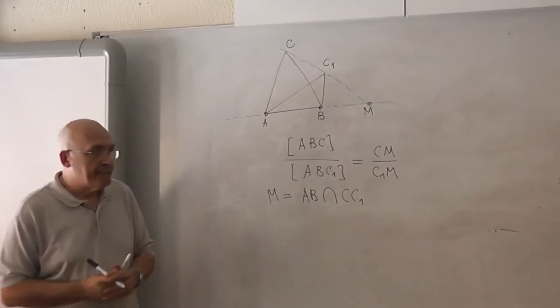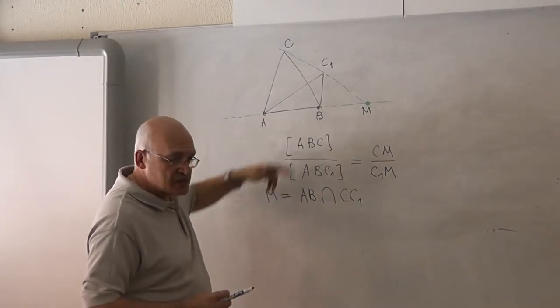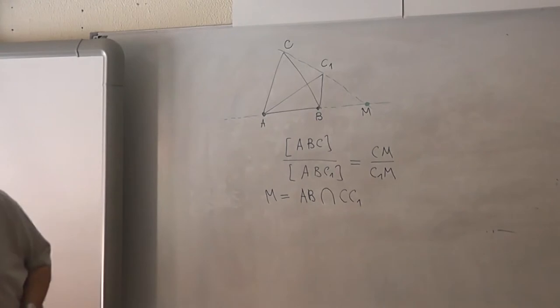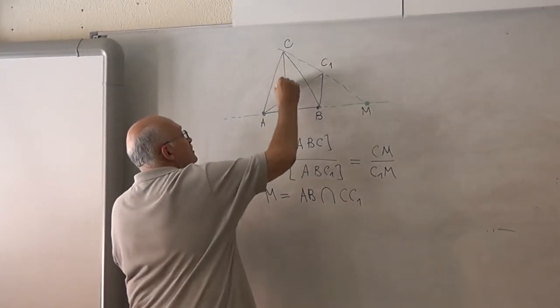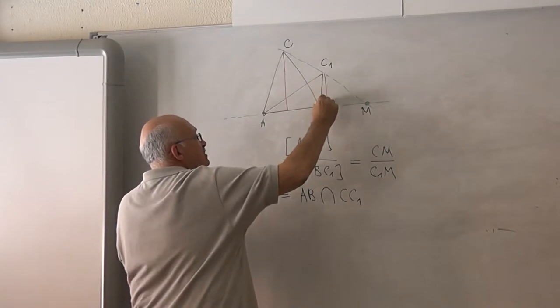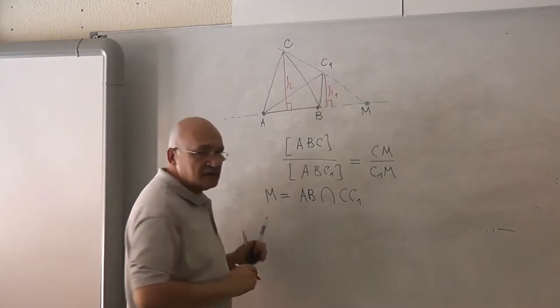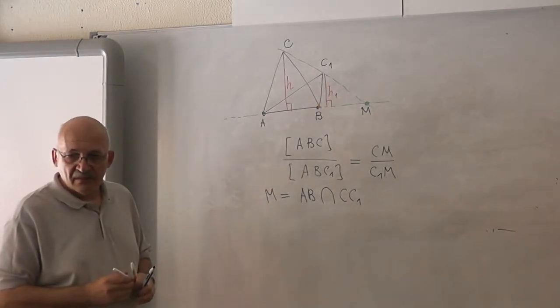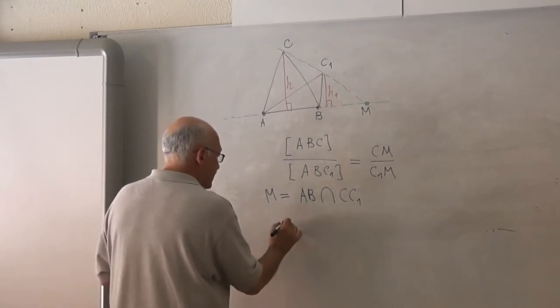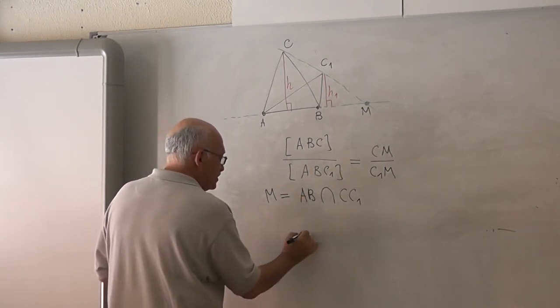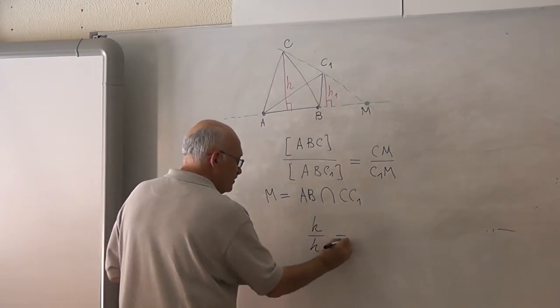Why? The two triangles have a common base, their ratio. The ratio of their areas is equal to the ratio of their heights. Yes, I draw the heights here. As we do. H and H1. Right? So this ratio is equal to H to H1.